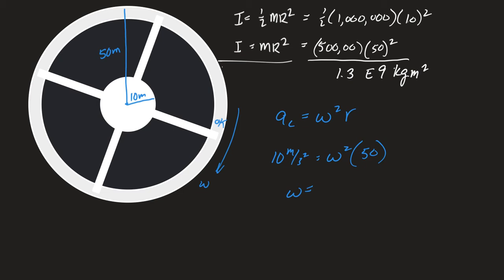Question number two: four rocket engines strapped to the edges of the space station are to fire in unison to spin the space station up — with what force will those engines have to fire to provide the necessary acceleration? Question number three: what is the angular momentum of the system when it's brought up to speed? These three questions bring up torque and kinematics.